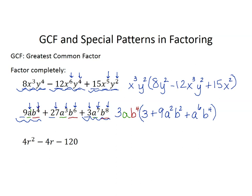Let's do one more. In this last example, we can take out 4 from each term, but we can't factor out any variable because not every term contains a variable — there's no r in every term. So we factor out the 4, which leaves us with r squared minus r minus 30.